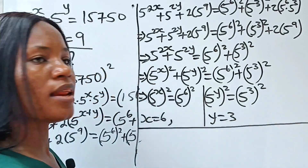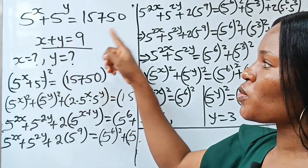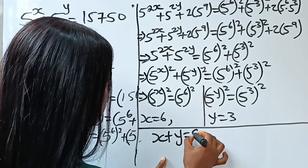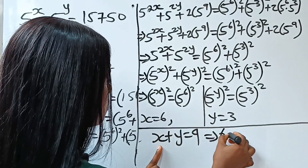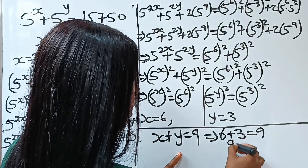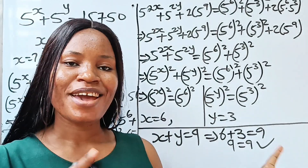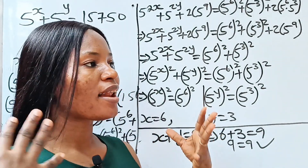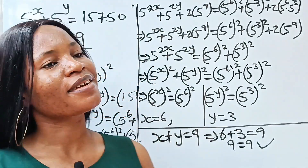Let's check. The second equation says x plus y equals 9. With x equal to 6 and y equal to 3, we get 6 plus 3 equals 9 — which is true. So our solution is correct. Thank you so much for watching. Have a lovely day.